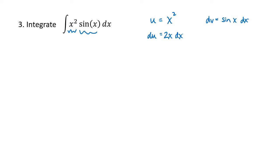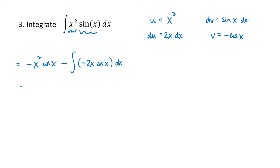Our du is 2x dx, and our v is the antiderivative of sine of x, which is negative cosine of x. So our integral becomes uv — that's negative x squared cosine x — minus the integral of v du, which is negative 2x cosine x dx. Minus a minus is a plus, so now our integral has transformed into integrating 2x cosine x dx. That's not an integral we can just do, but it is easier than what we started with, because 2x is replacing the x squared.